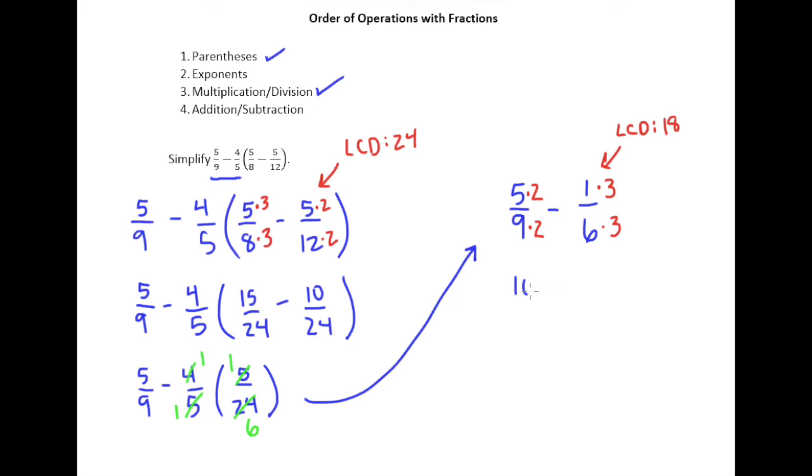And now we end up with 10/18 minus 3/18. 10 minus 3 is 7, so the answer is 7/18. 7 and 18 do not share a common factor, so this is our reduced answer.